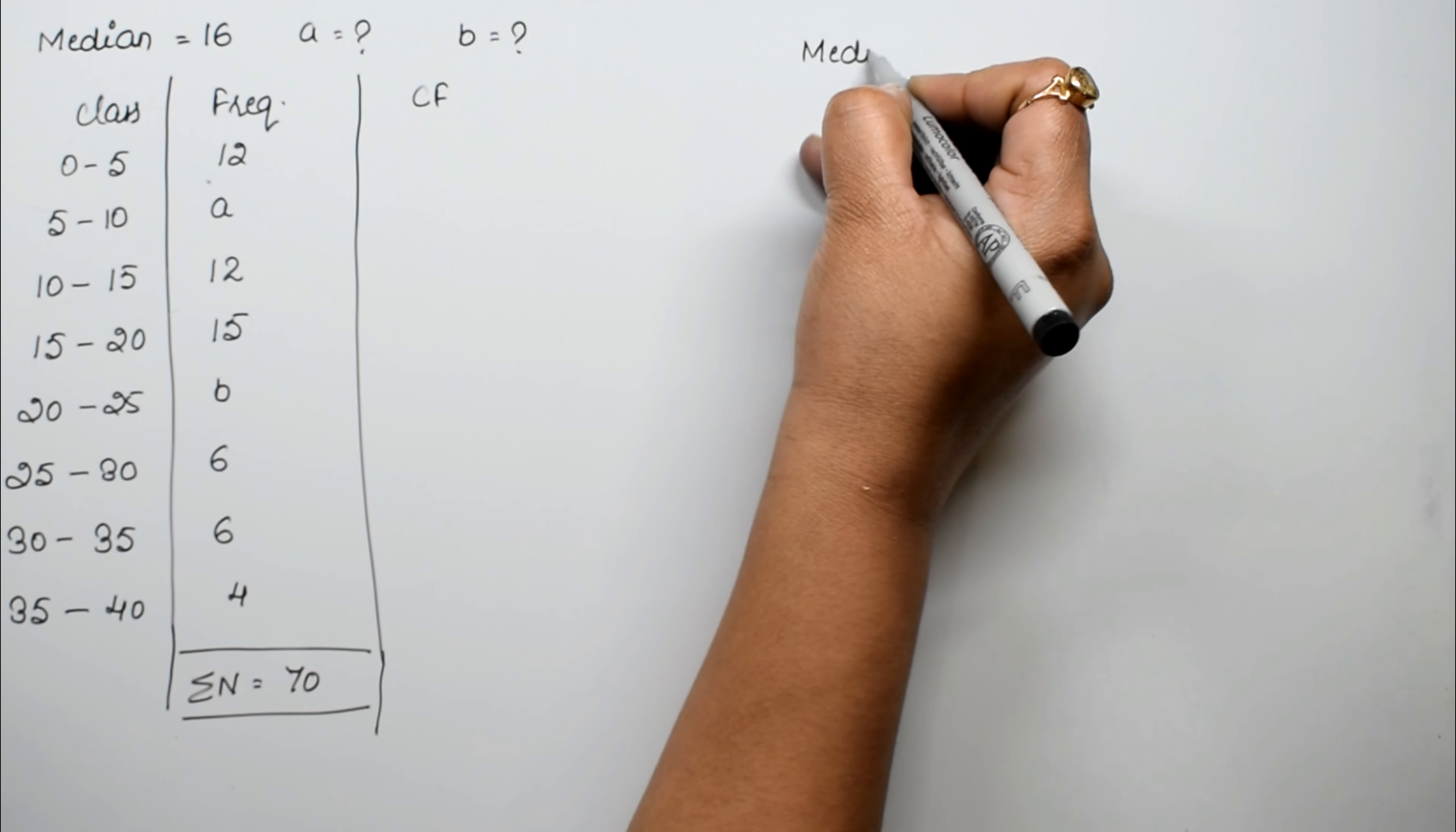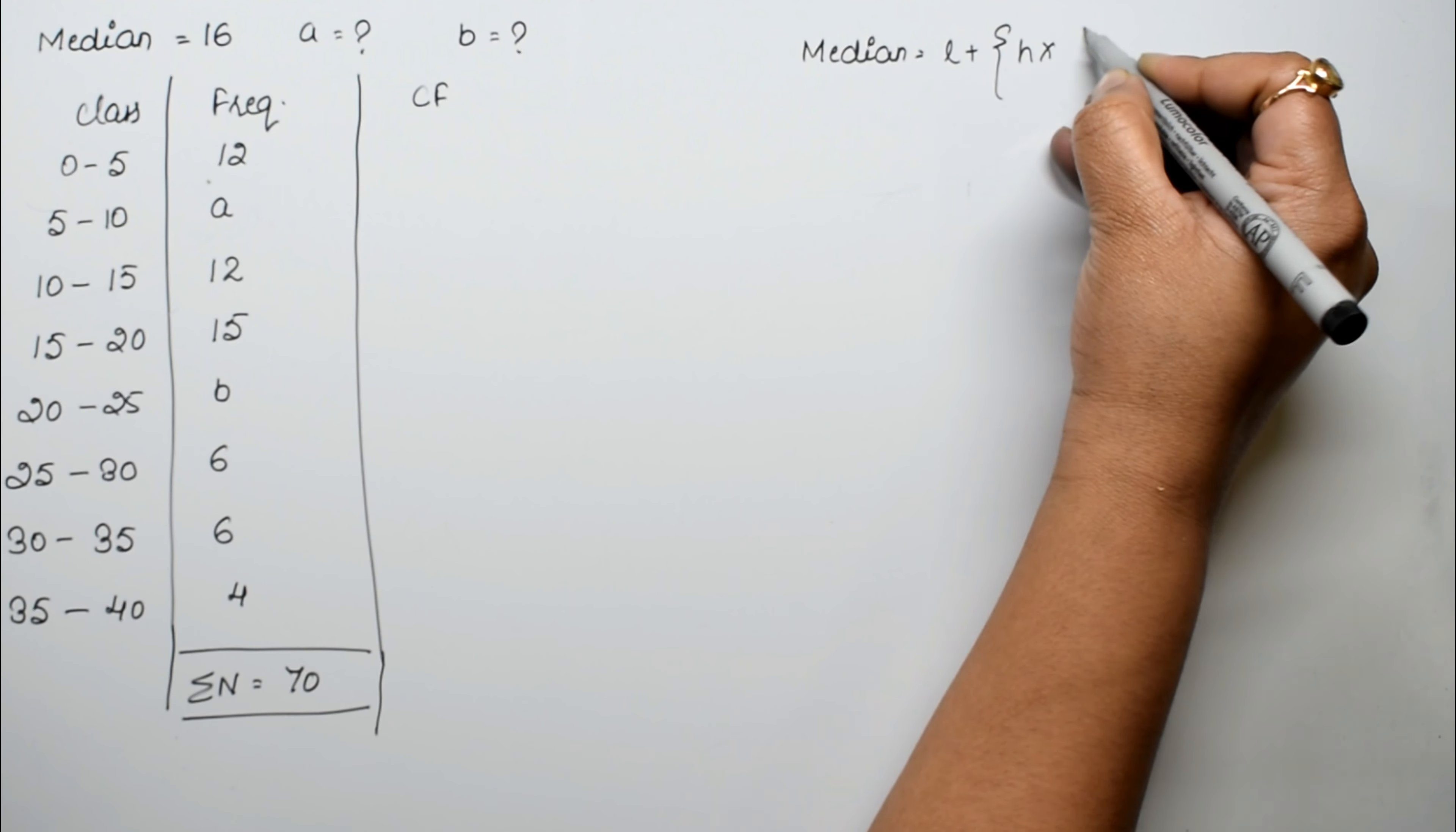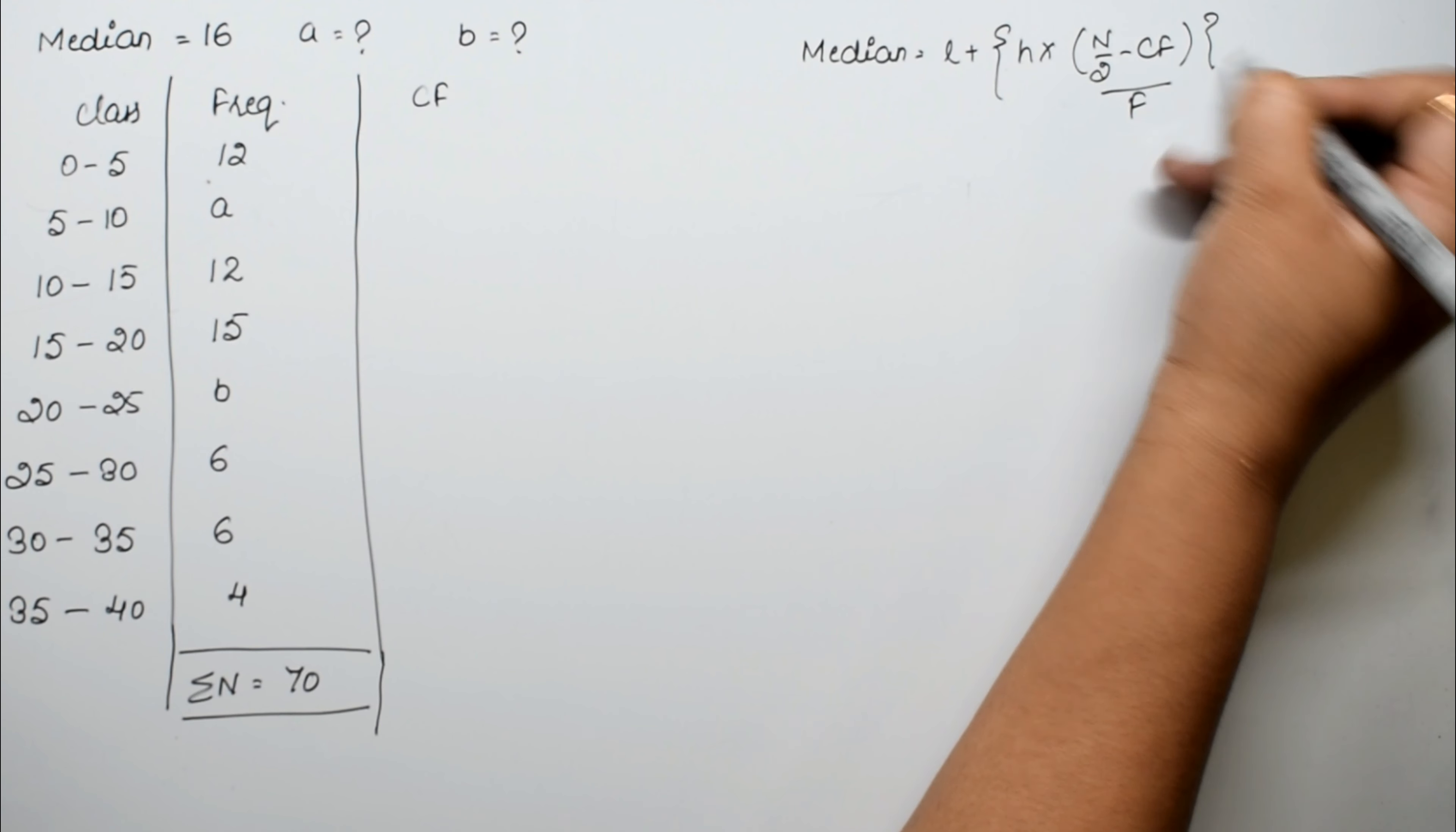Before we proceed, let's write the median formula: L plus H times [(N/2 minus Cf) divided by F].